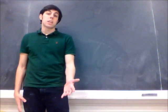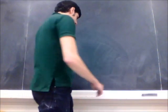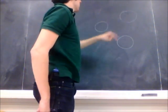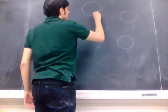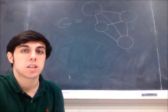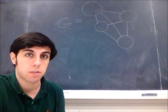So what the crossing number is, is given any graph, like this one, it's the minimum number of crossings of edges that there will be in a planar drawing of the graph.